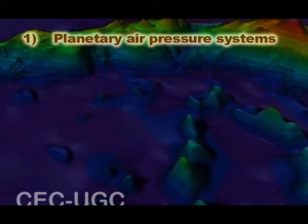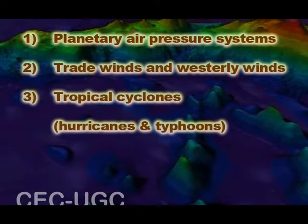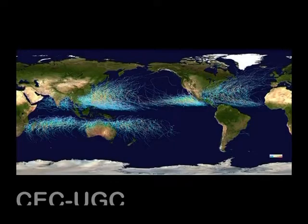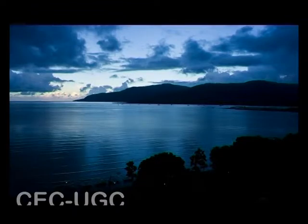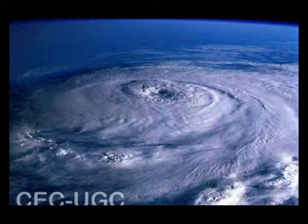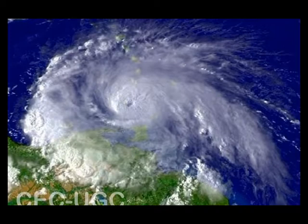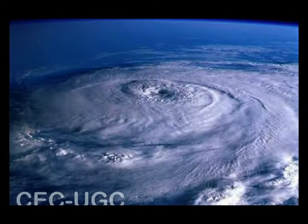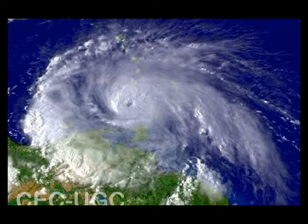The climate of the Pacific is greatly influenced by the planetary air pressure systems, the trade winds and westerly winds, tropical cyclones including hurricanes and typhoons, continental influences, and monsoonal rainy seasons. The trade winds and westerly winds are well-developed patterns modified by seasonal fluctuations. Tropical cyclones may form south of Mexico from June to October and affect Mexico and Central America every year. The western Pacific is monsoonal, with tropical cyclones including typhoons striking Southeast and East Asia from May to December.